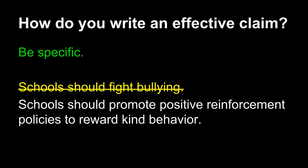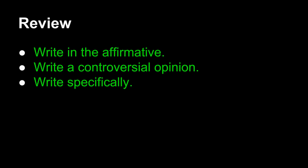Why would I do this? It seems overly complex and wordy. However, it's much easier to write — 'Schools should promote positive reinforcement policies to reward kind behavior' helps me focus my argument on a specific course of action. It makes my writing easier to research and easier to express. To review, writing an effective claim only requires three reminders: write in the affirmative, write a controversial opinion, and write specifically. If you have followed the rules for writing a claim — using a responsible agent, the word 'should,' and an action — then proof your claim for these three rules. You should write a claim that is not only logically intact, but effective, and can lead an excellent argument.